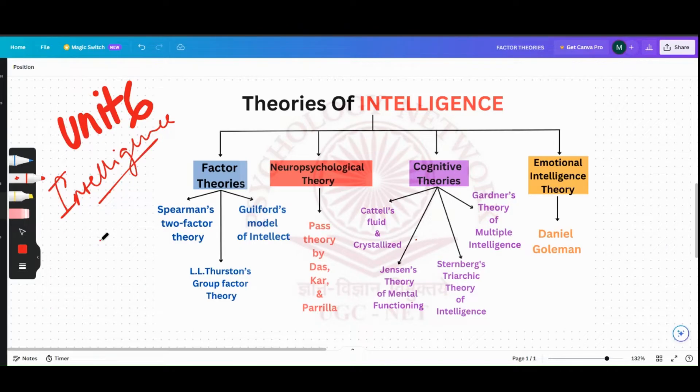Under intelligence, what they have done is that they have given the name of the propounders, but what they haven't given is the name of the theory and what kind of theory they are. So I've just made a quick little chart which would make it easier for you to understand the name of the propounder, what theory he or she has given, and also what kind of theory it is.